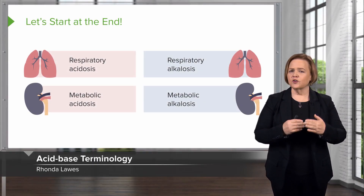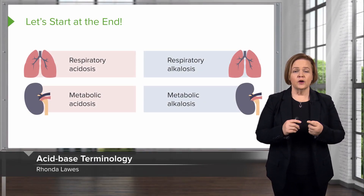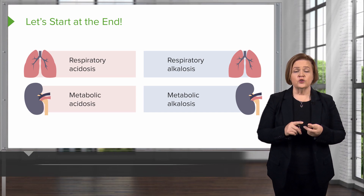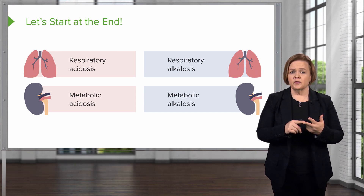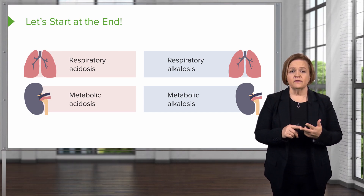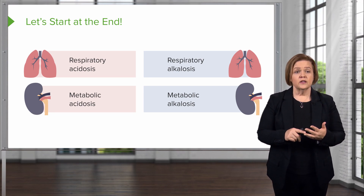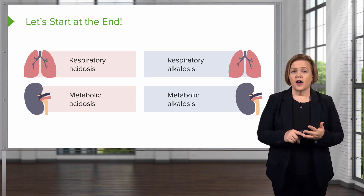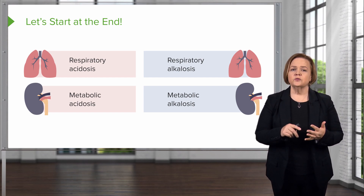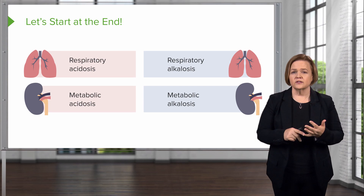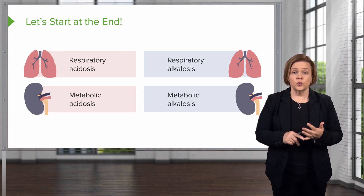Now that we've laid down the groundwork, you understand what pH is. You know the normal pH is 7.35 to 7.45. We've looked at CO2 — it's controlled by the lungs, normal level 35 to 45. We've looked at bicarb, which is controlled by the kidneys — really the whole metabolic system. Normal levels are 22 to 26.